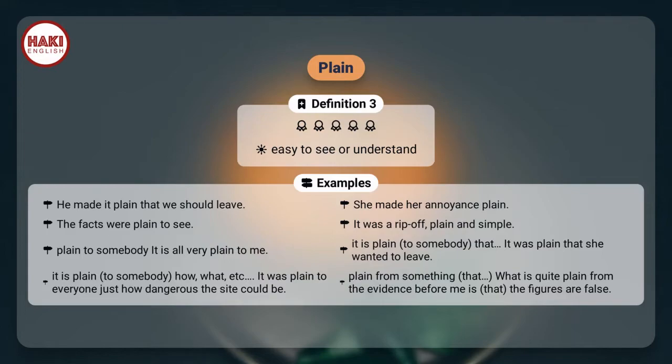Plain to somebody: It is all very plain to me. It is plain to somebody that it was plain that she wanted to leave. It is plain to somebody how, what, etc. — It was plain to everyone just how dangerous the sight could be.